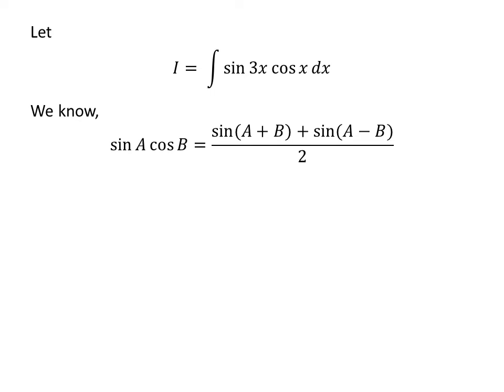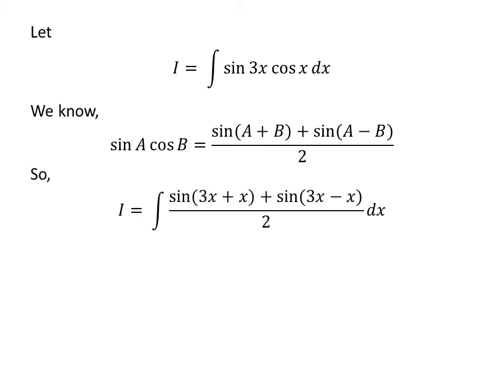We know the trigonometry identity: sine of a times cosine of b is equal to sine of a plus b plus sine of a minus b, upon 2. I have replaced the sine of 3 times x times cosine of x in the integral by its value as per the above trigonometry identity.